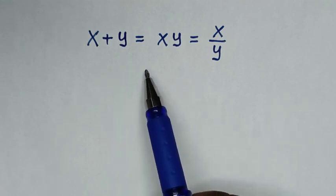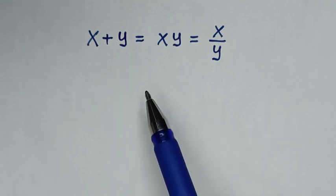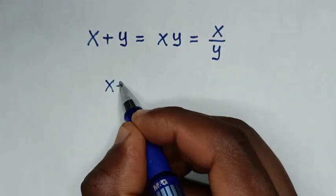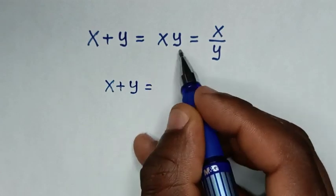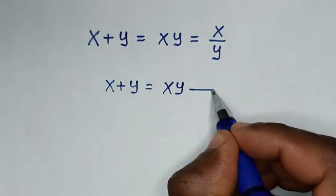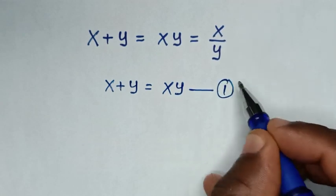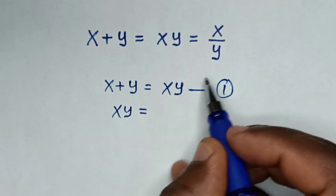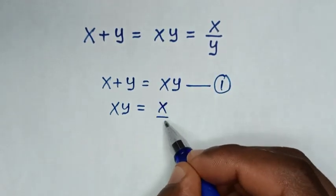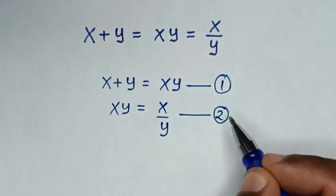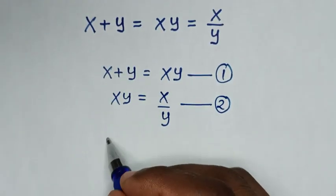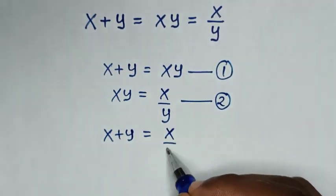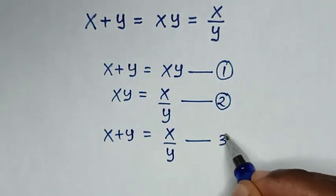From here we have three equations: the first equation is x plus y equal to xy; the second equation is xy equal to x over y; and the third equation is x plus y equal to x over y.